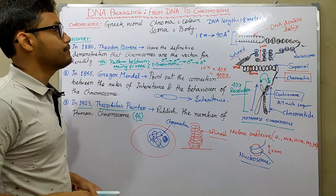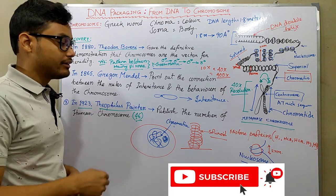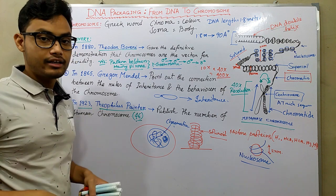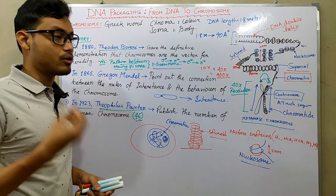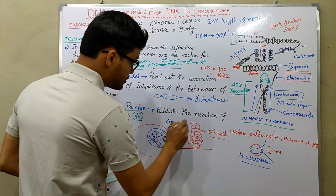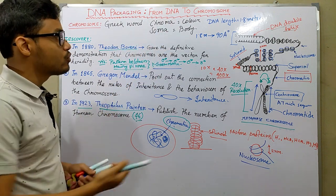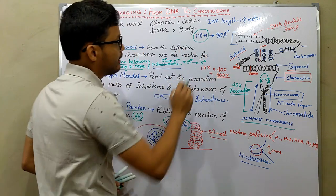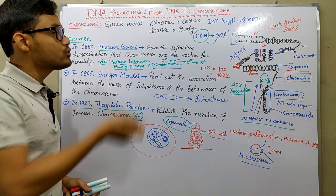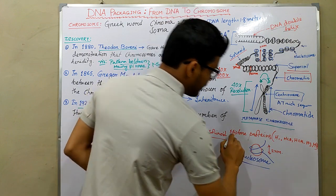This video is helpful for understanding the proper packaging of DNA and the existence of chromosomes. In an undividing cell, the term 'chromosome' does not apply — instead we observe chromatin. In a dividing cell undergoing meiosis or mitosis, the chromosome structure appears. Our DNA of 1.8 meters coils up into a 90-angstrom region, requiring enormous complexity achieved through histone proteins.